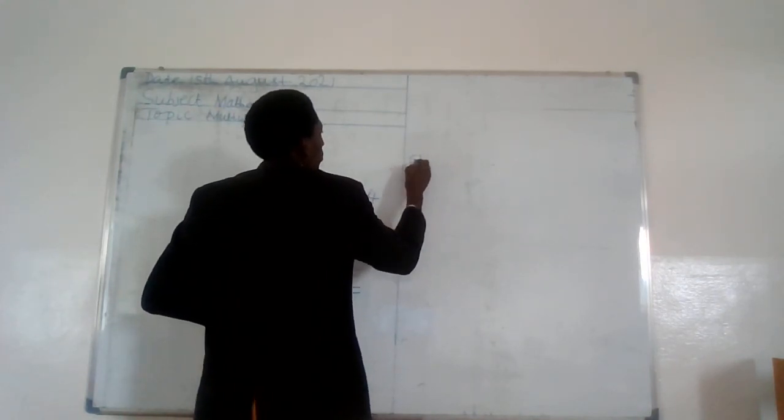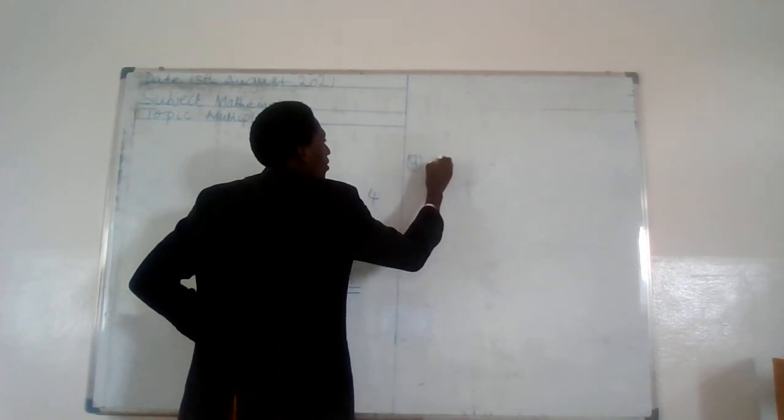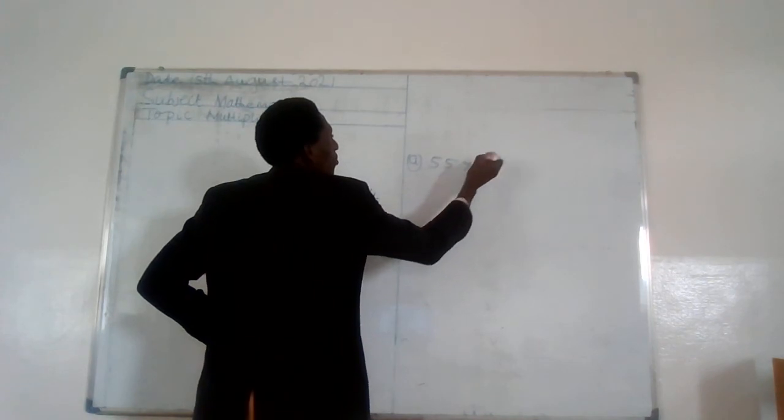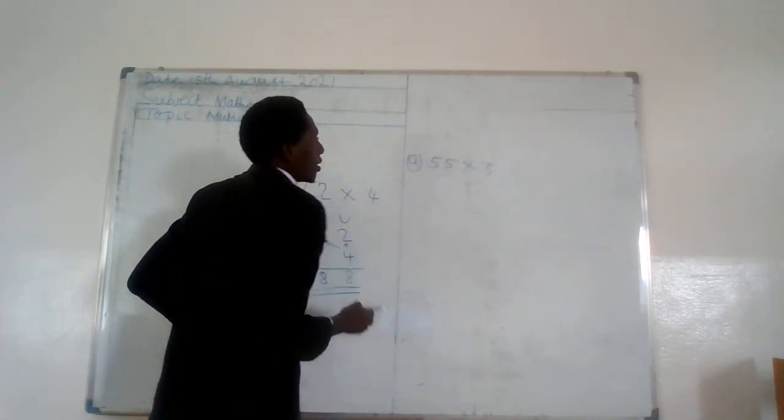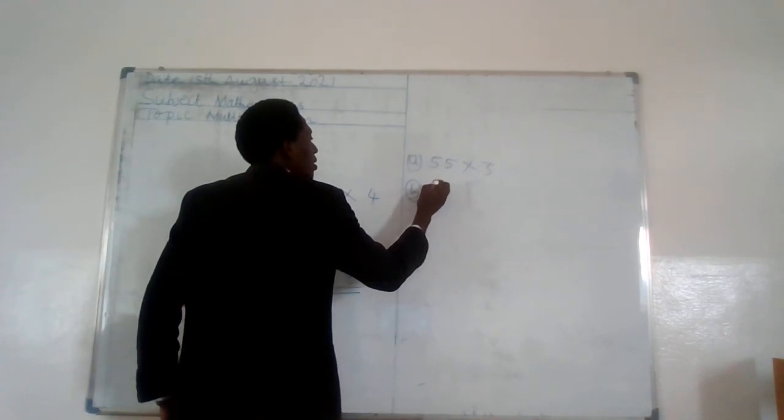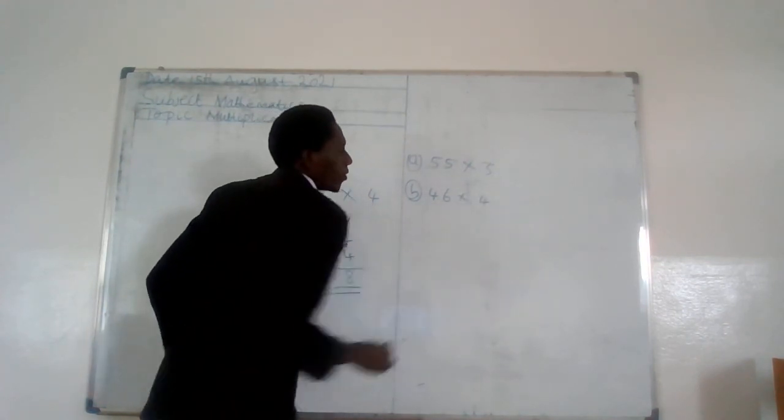When you go, try to multiply 55 by 3, and multiply 46 by 4.